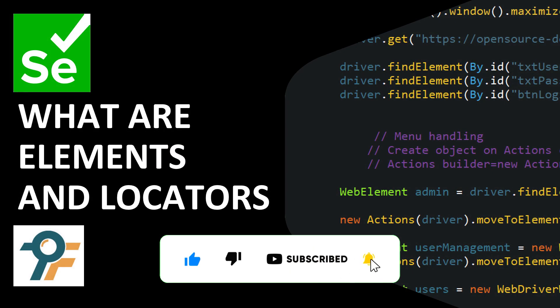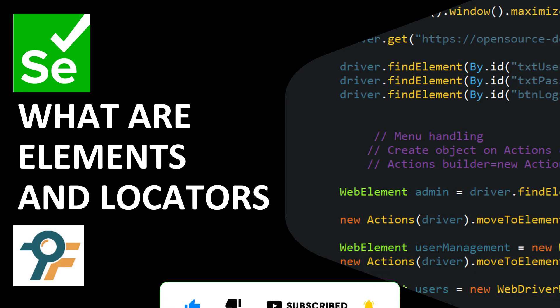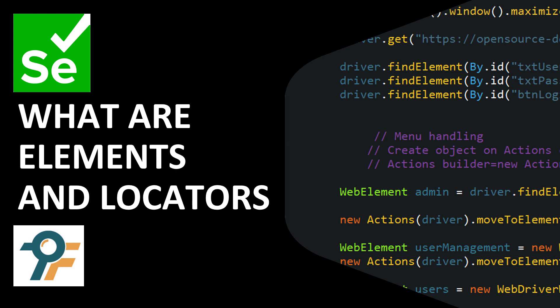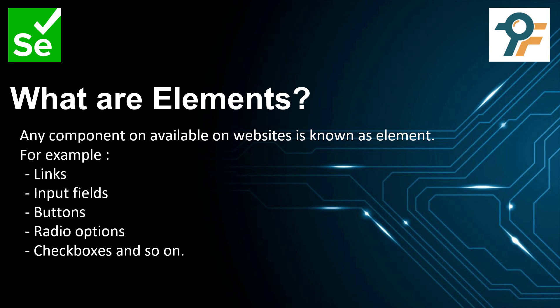Hello everyone, welcome to this Selenium tutorial. In this tutorial we will learn about elements and locators. Elements are basically components which are available on websites. For example, if you go to any web application, you will find links, input fields, buttons, radio options, checkboxes — there are so many things you can see on different web applications. These are known as elements.